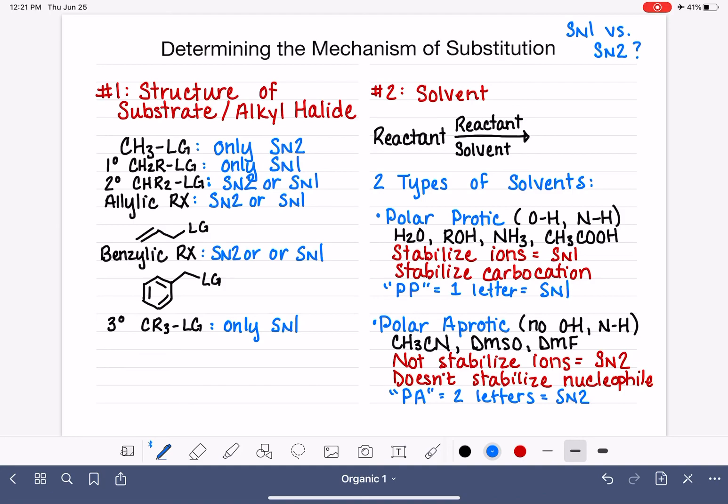The one-letter solvent is the SN1 reaction, and the two-letter solvent is the SN2 reaction. I know that's kind of cheesy, but that's how I remembered it myself back in the 90s when I was taking organic chemistry. If you can remember polar protic, one letter, SN1, then the only thing you need to actually remember is which solvents are protic and which are aprotic.